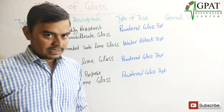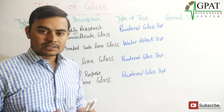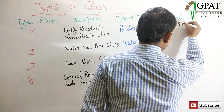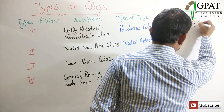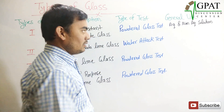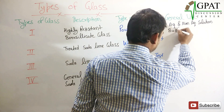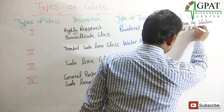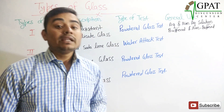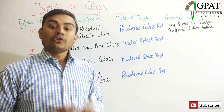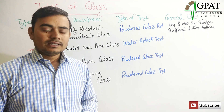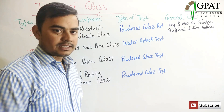Regarding general use: highly resistant borosilicate glass — Type 1 — is mainly used for aqueous and non-aqueous solutions, including buffered and non-buffered solutions.